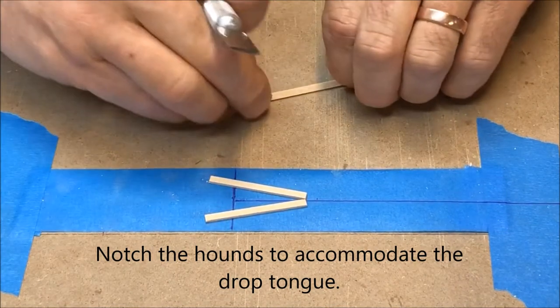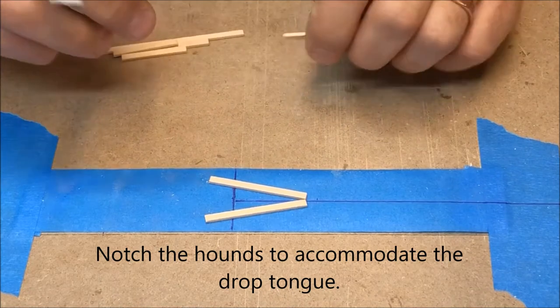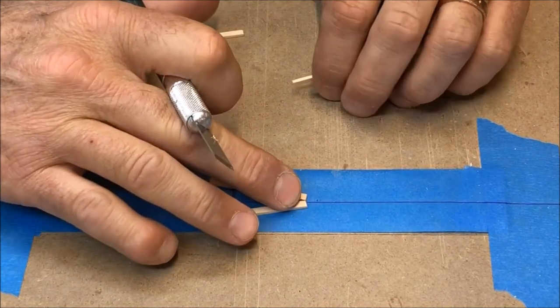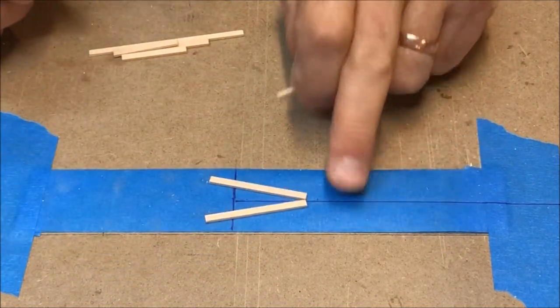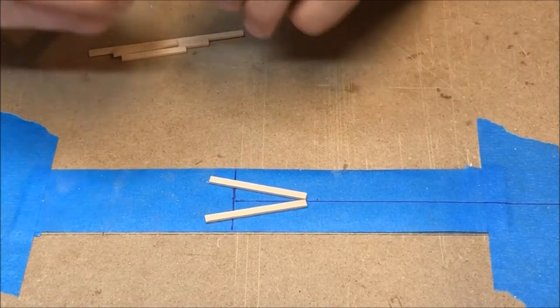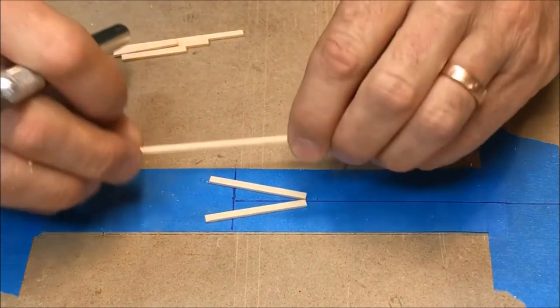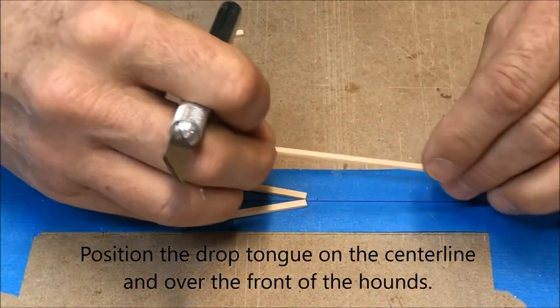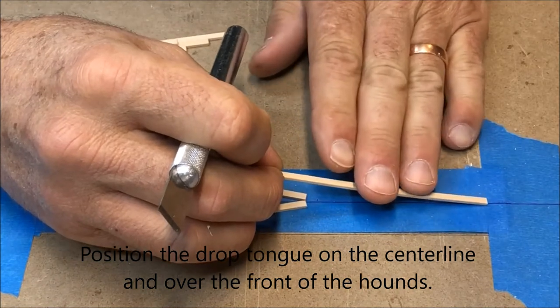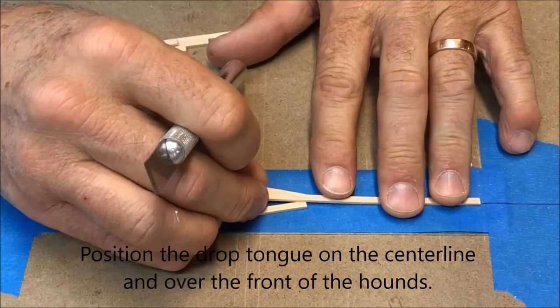Now we're going to make the part of the suspension where the front hounds attach to the drop tongue and I called that a hitch bar before but some people call it a drop tongue. So what we're going to do is we're going to position the drop tongue on the midline having it go over the front edges of the hound.